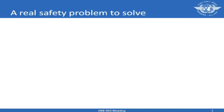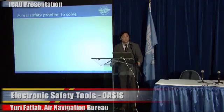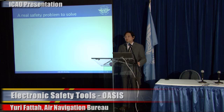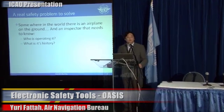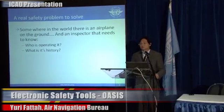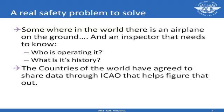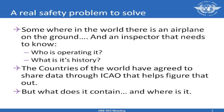I want to start from reality and present a scenario of a real safety problem that might be required to solve almost on a daily basis. Somewhere in the world, there is an airplane on the ground and an inspector that needs to know who is operating it and what's the history of this particular aircraft. The contracting states of ICAO have agreed to share data through ICAO that helps this inspector find the answers. So the key question is: what data is there that helps this inspector and where can we find it?